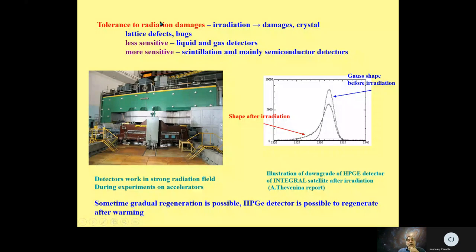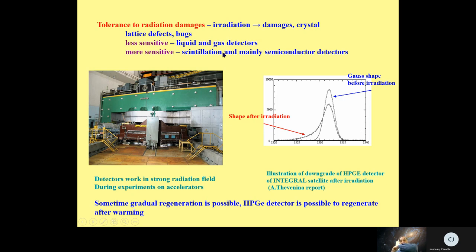Another important quantity is tolerance to radiation damage. Detectors are often used in radiation fields, so it is necessary to know which detectors are more resistant. The worst situation is for crystals, because radiation creates crystal lattice defects. Less sensitive are liquid or gas detectors, since they have no structure to destroy. More sensitive are scintillation crystal detectors, and the worst situation is for semiconductor detectors.